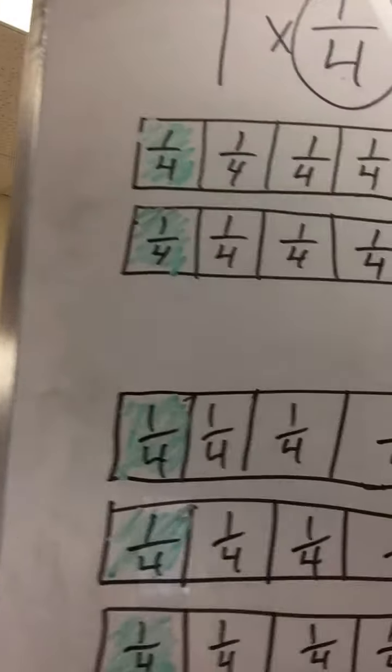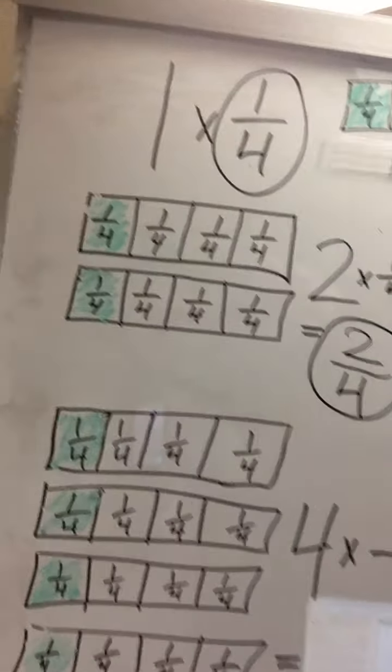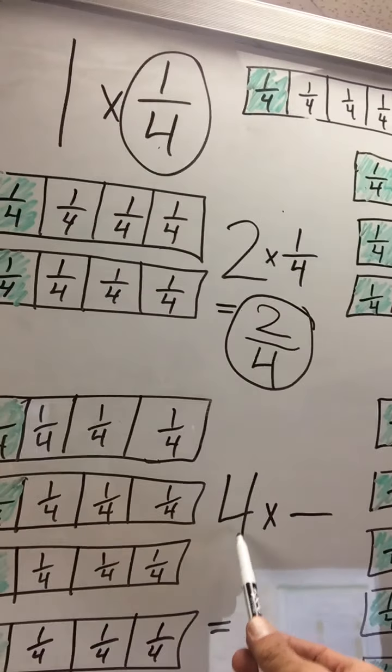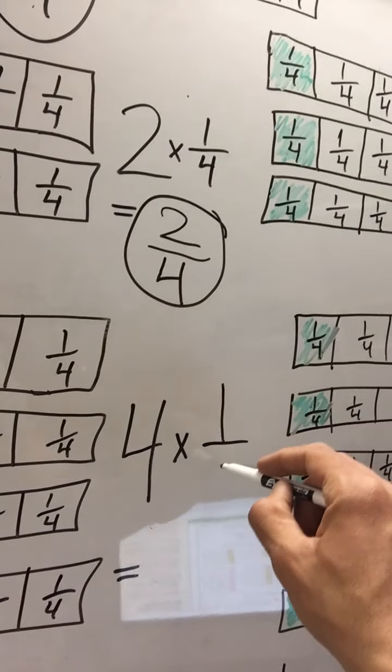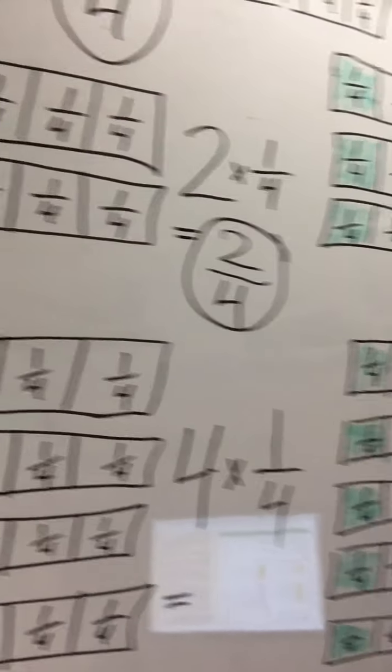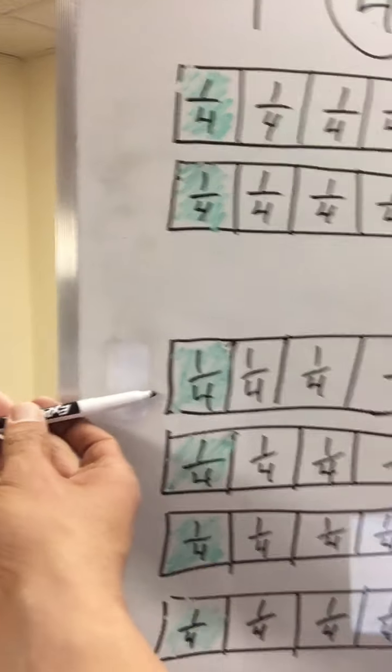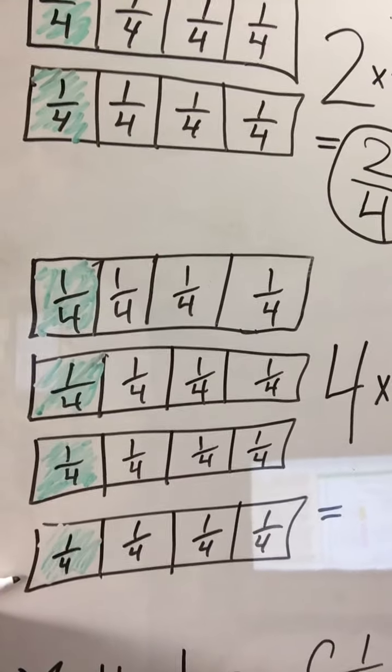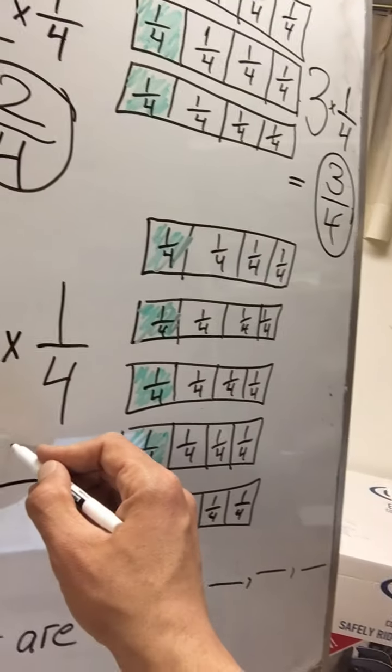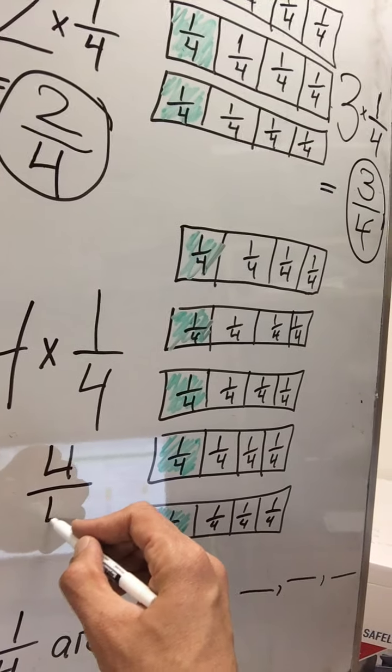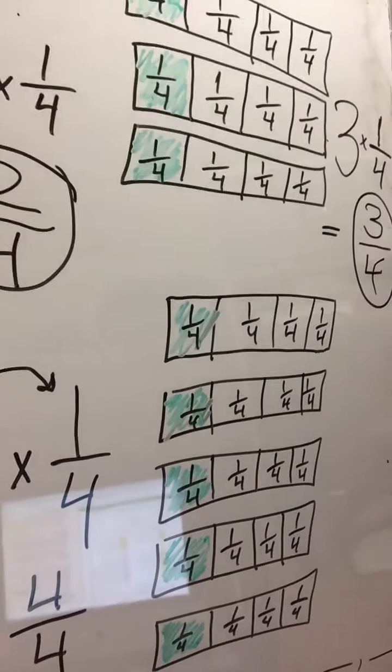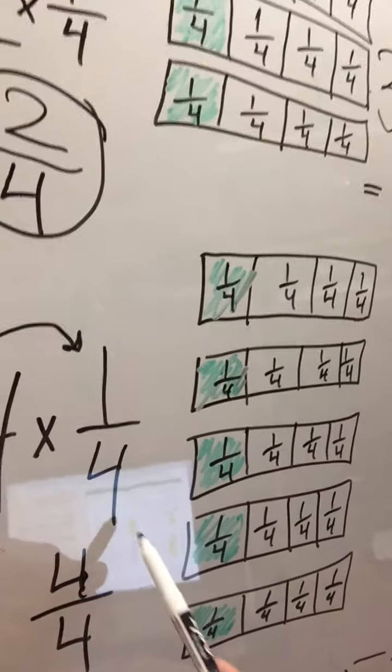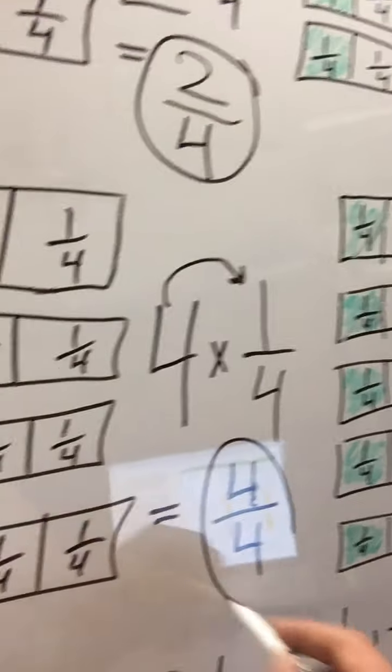Let's move down to the next one. Now they're telling us four. They gave us the whole number four. 4 times 1/4. What does that equal? Let's count. We can count too, right? 1/4, 2/4, 3/4, 4/4. So 4 times 1/4 equals 4/4. What's the other way we could do it? We could also multiply our whole number 4 times the 1. 4 times 1 is 4. Denominator stays the same. So our next multiple was 4/4.